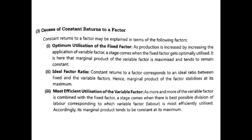The second cause is ideal factor ratio. When the fixed factor was under-utilized, adding variable factors to properly utilize it brings the production toward the ideal factor ratio. Once the ideal factor ratio is achieved, total product increases at a constant rate. If more variable factors are added beyond this point, total product starts to decrease.